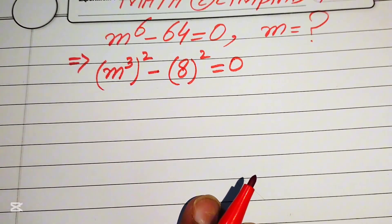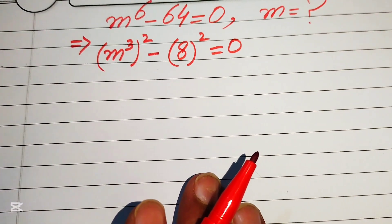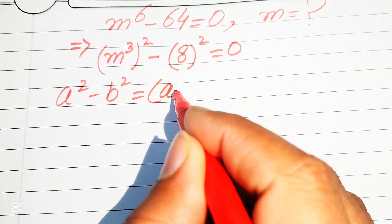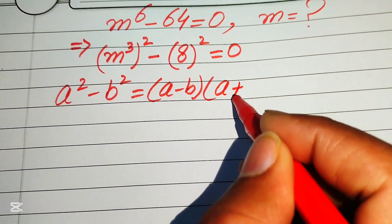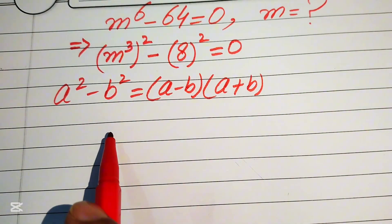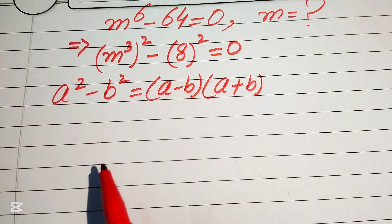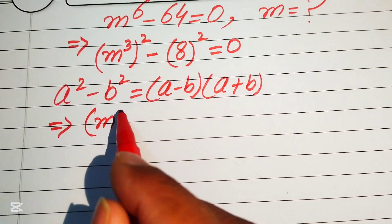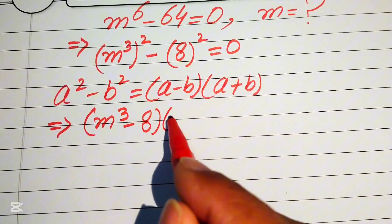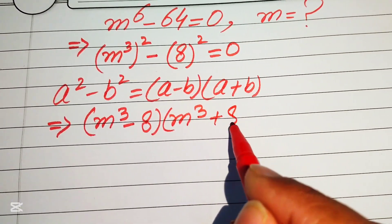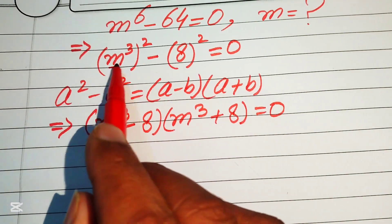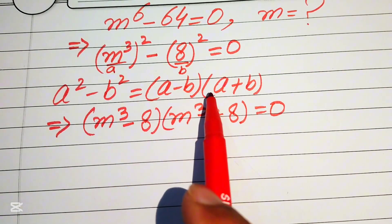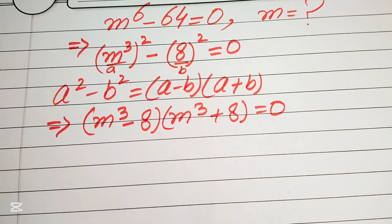For further simplification, we apply the algebraic formula: a squared minus b squared equals (a minus b)(a plus b). Applying this to our equation with a = m³ and b = 8, we get (m³ minus 8)(m³ plus 8) equals 0.